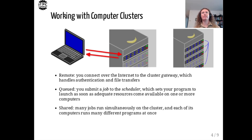From your computer, you access a cluster over the internet through a gateway computer. Rather than launching your program directly, you must request an allocation of processors, memory, and time. A scheduler will determine whether one or several computers can satisfy your request, and the soonest time slot when the resources are expected to become available. If nobody else is using those computers, your program will launch immediately. Otherwise, it enters a queue and will launch as soon as the computers have finished running other users' jobs.